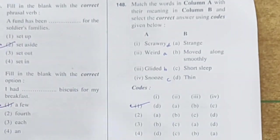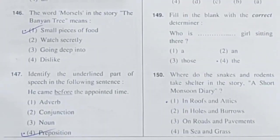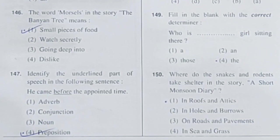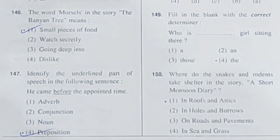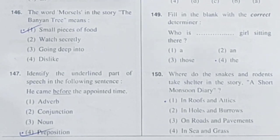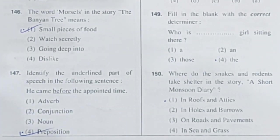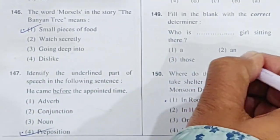Question 149: Fill in the blank with the correct determiner. Who is ___ girl sitting there? We are talking about a particular girl, so we use the definite article 'the.' Whenever a particular person or thing is referred to, we use the definite article 'the.' Option 4 is correct.